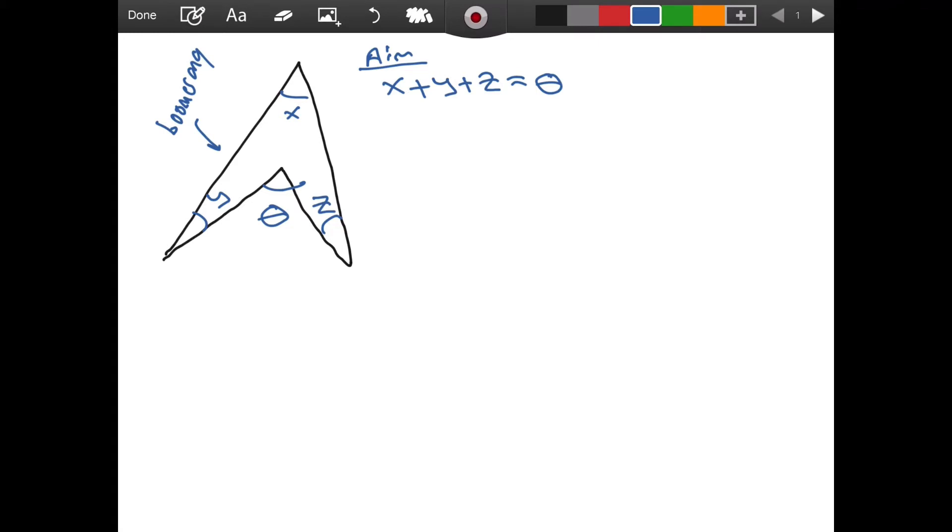So how can we prove this equation to be true? Well, let's draw a line connecting these two points. And as you can notice, we have a triangle here, right? We have a new triangle here and a new triangle here.